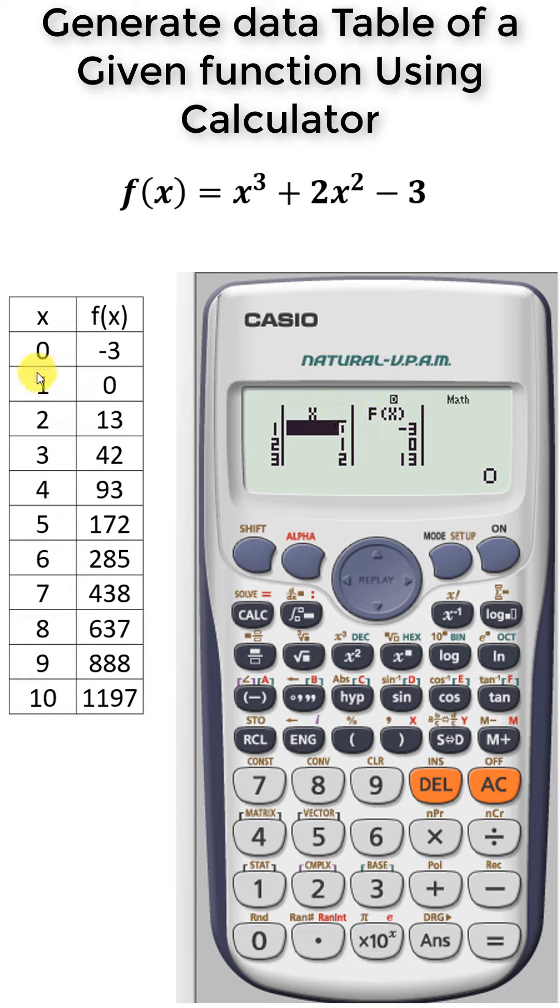Zero gives minus three, one gives zero, two gives thirteen, and similarly we can check all the values.